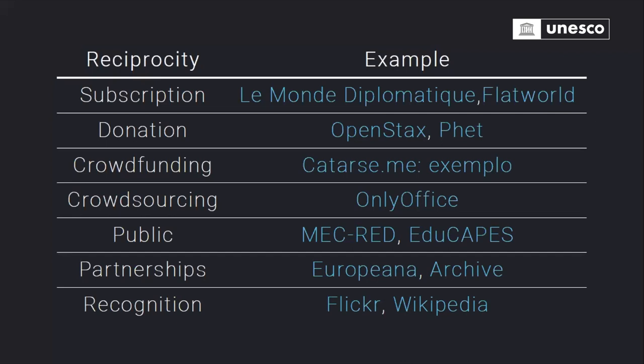Finally, partnerships — establishing partnerships with existing players and creating a consortium is a really good way. Archive.org does this with libraries that want to share content online. Europeana is a great consortium example. Working through recognition may not seem like an economic model, but putting content online to get public display, community participation, or recognition for your work are important ways to look at sustainability.